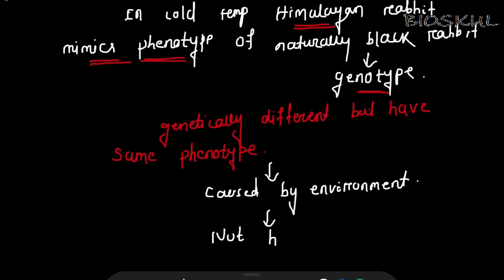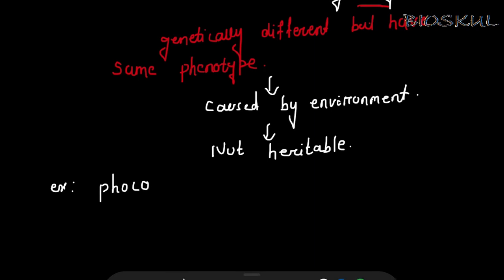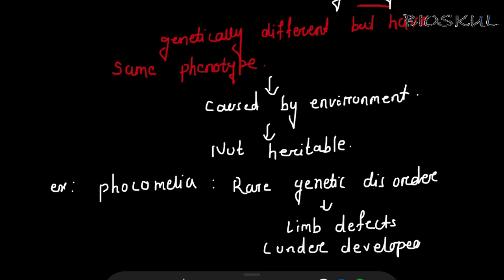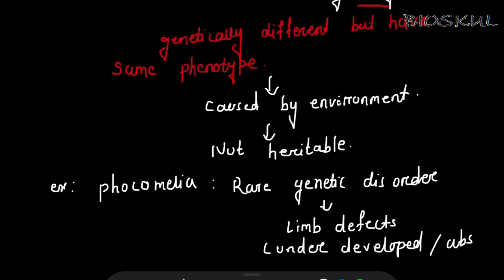Another example is phocomelia. Phocomelia is a rare genetic disorder in humans that leads to limb defects — the limbs are either underdeveloped or absent. Here you can see in the image that the arms and legs are underdeveloped and close to the trunk.